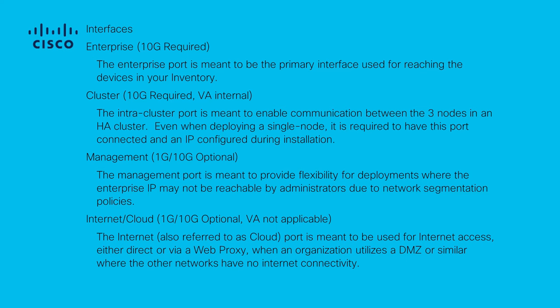The management interface is a 1 gigabit port on the primary network adapter and a 10 gigabit port on the secondary adapter. If a second virtual adapter is added to a virtual appliance, then it is mapped to the management interface. Some environments have strict network boundaries requiring the enterprise interface to be placed in a secured network, which causes difficulty for Catalyst Center admins and users to access it. The management interface provides these customers with the ability to configure a second reachable IP address.